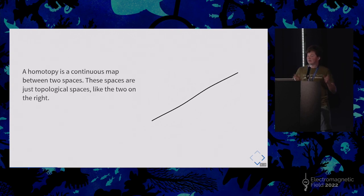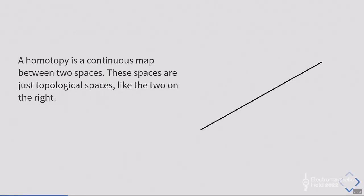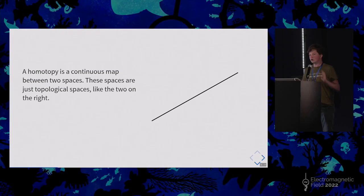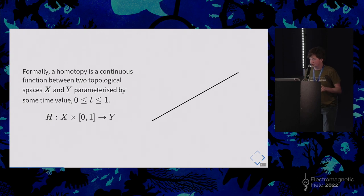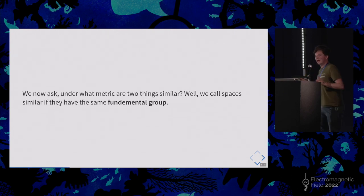Okay, so a homotopy to the mathematicians is a continuous map between two spaces. Spaces are just kind of shapes and that's how we have to think about them. So like the two on the right, we went for a squiggle to align their both spaces, we call them topological spaces. Okay, so to the real mathematicians in the audience, a homotopy is a continuous function between two, blah blah blah. We don't really care about this. So we now ask, under what metric are two things similar? So if I want to say park runs are the same, how am I going to do this?